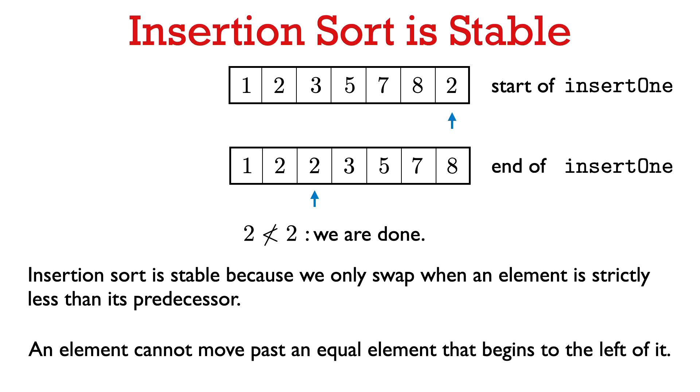Insertion sort is stable because we only swap an element with its left neighbor when the element is strictly less than its neighbor. Also note that elements in insertion sort only move from right to left. This means that an element starting to the right of another element with which it compares equal can never move past it, and so it remains to the right of that element at the end of the algorithm. That's why insertion sort is a stable sort.